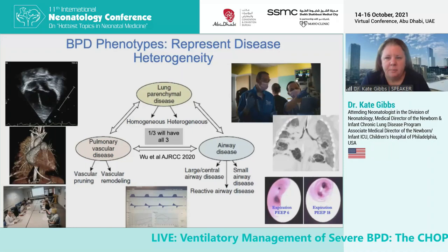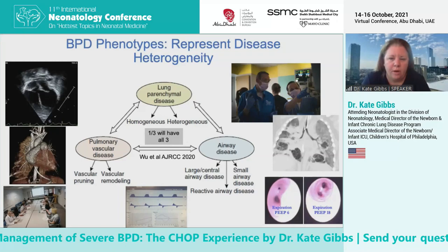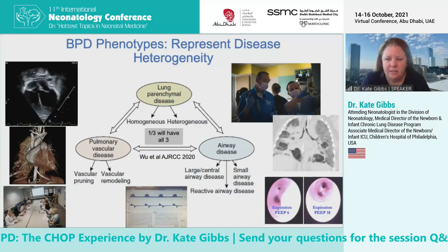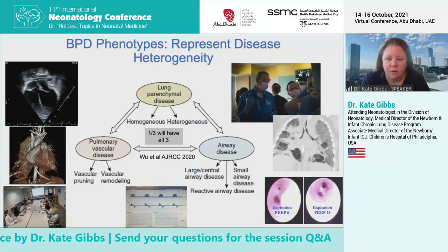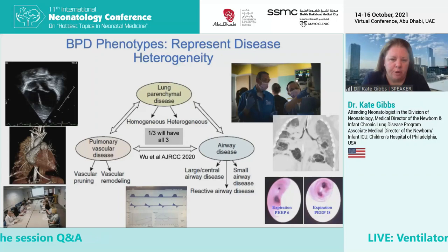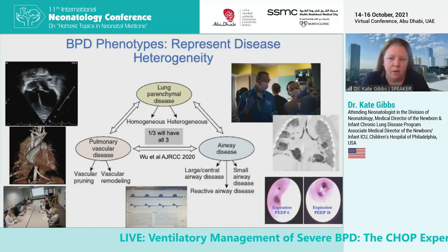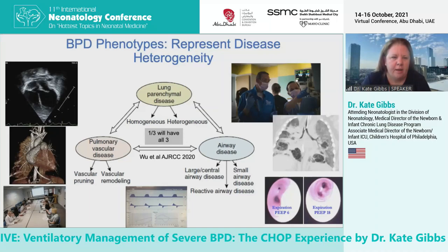We think of BPD in terms of phenotypes based on data from our program. The buckets we place are: lung parenchymal disease, which can be homogeneous or — more commonly — heterogeneous, as seen on CT scan; airway disease involving both large and small airways, with the small airway disease often having an obstructive and reactive component; and pulmonary vascular disease from vascular pruning and remodeling, which can include both pulmonary arterial hypertension and pulmonary venous obstructive disease. We use bronchoscopy, CT scans, ventilator graphics, spirometry, and echocardiography to identify the phenotype for each baby.